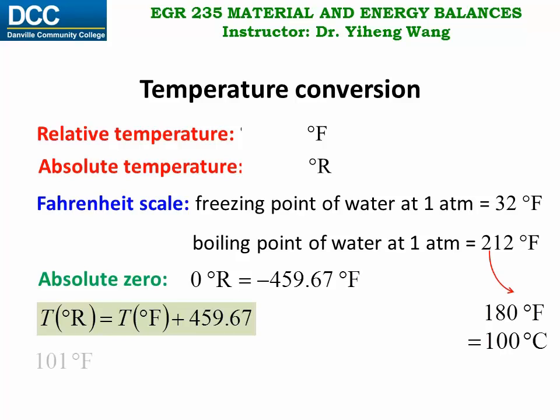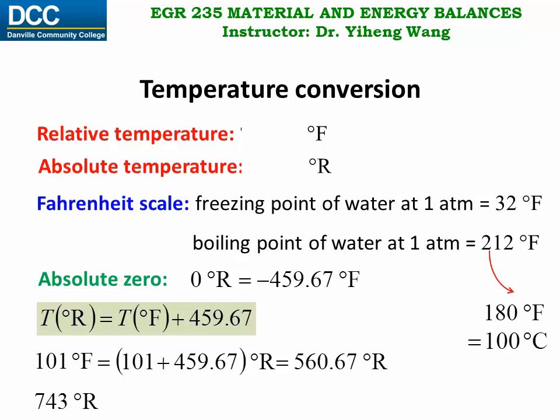For example, if you start with 101 degrees Fahrenheit and want to convert to Rankine, you only need to add 459.67 to it. Similarly, if you start with 743 degree Rankine and want to convert to degree Fahrenheit, you only need to do subtraction.